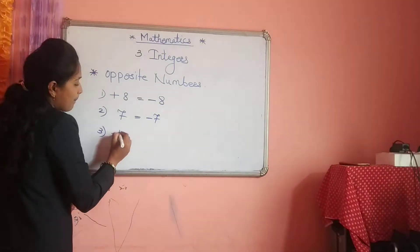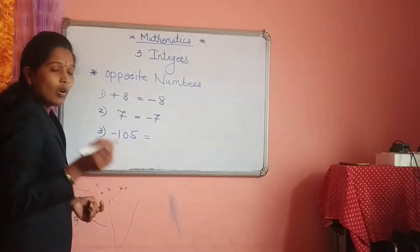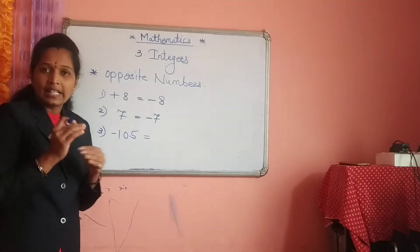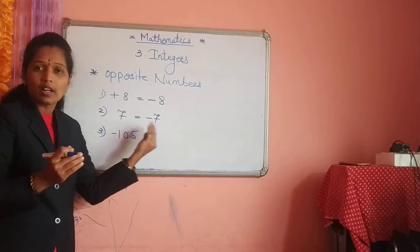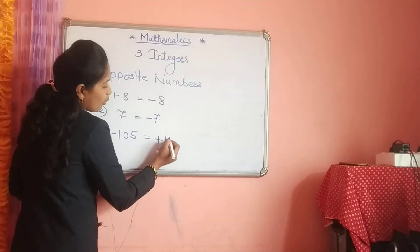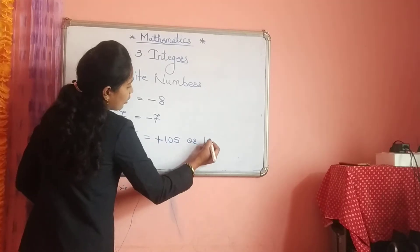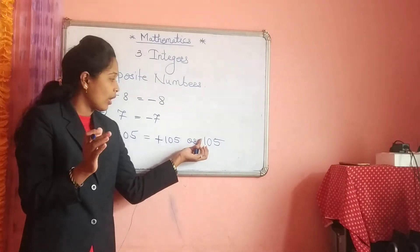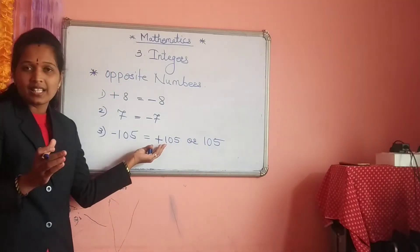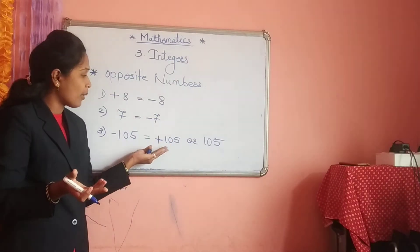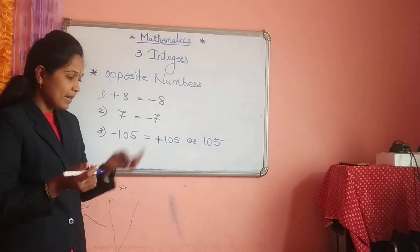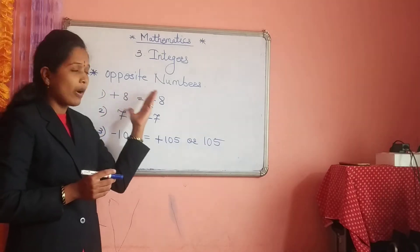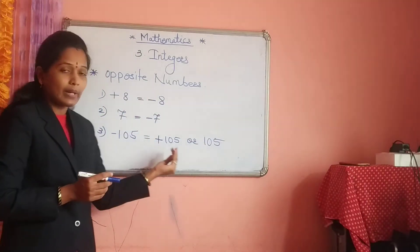Next example: minus 105 is given. The number is already in negative form. So it turns to the opposite number — minus turns to plus. You can write down plus 105, or you can write down only 105. When no sign is given in front of the number, it is also called a positive number. So, opposite number is very easy: a positive number you write in negative form, and a negative number you write in positive form.